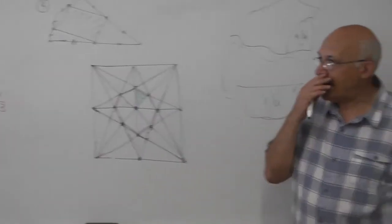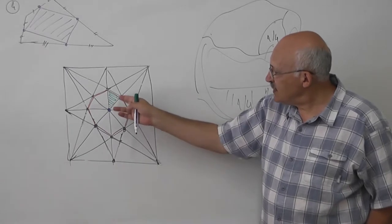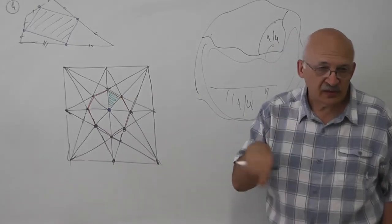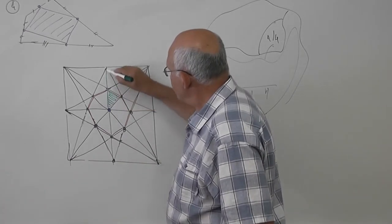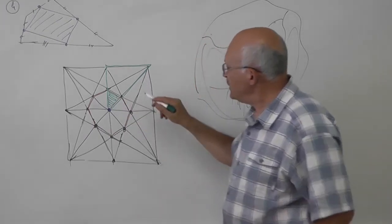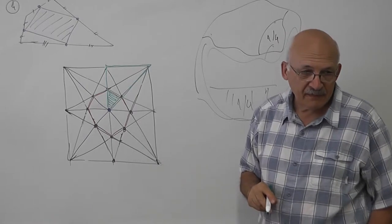So it suffices to find the area of this triangle. To find the area of the green triangle, we can compare it to this big green triangle.